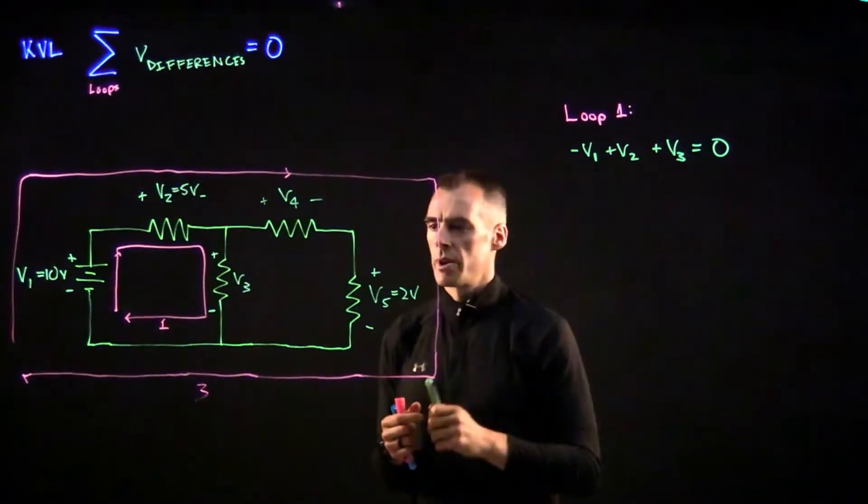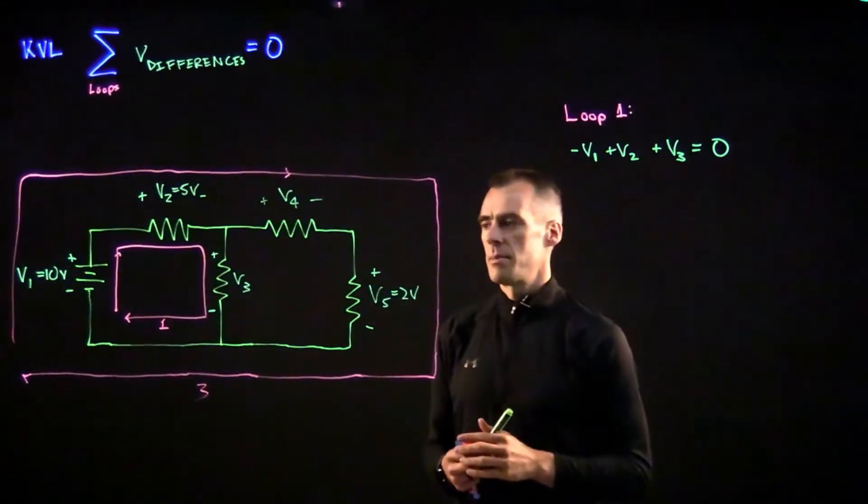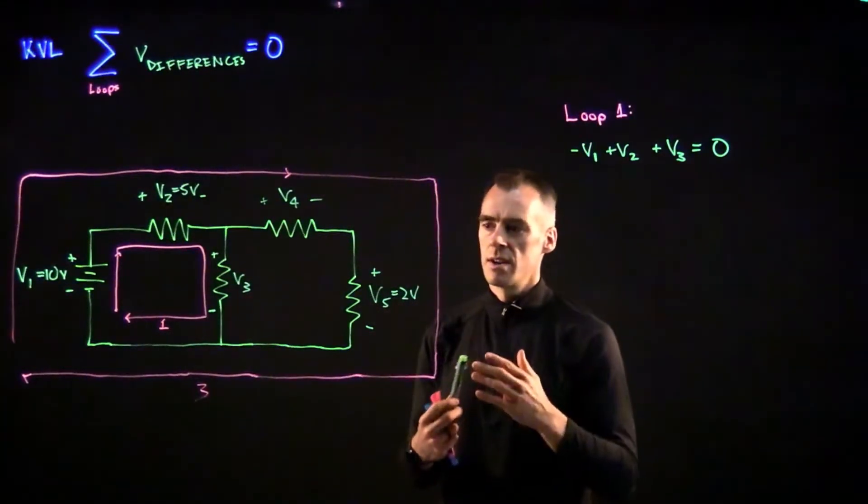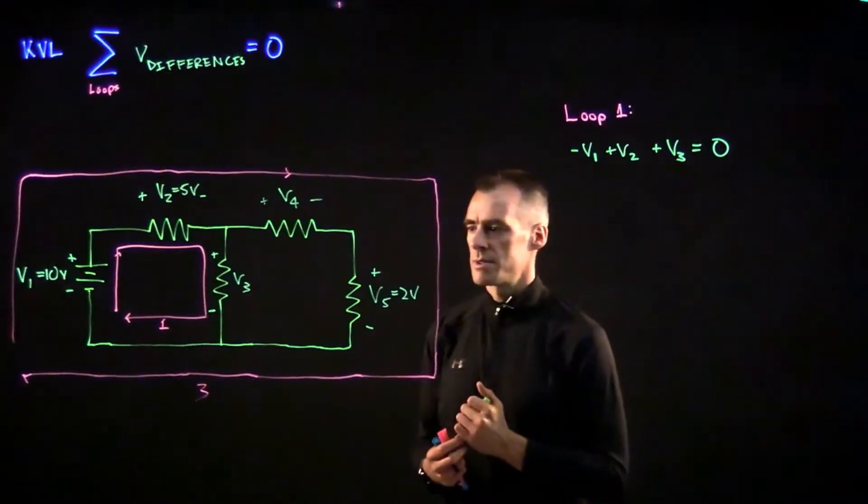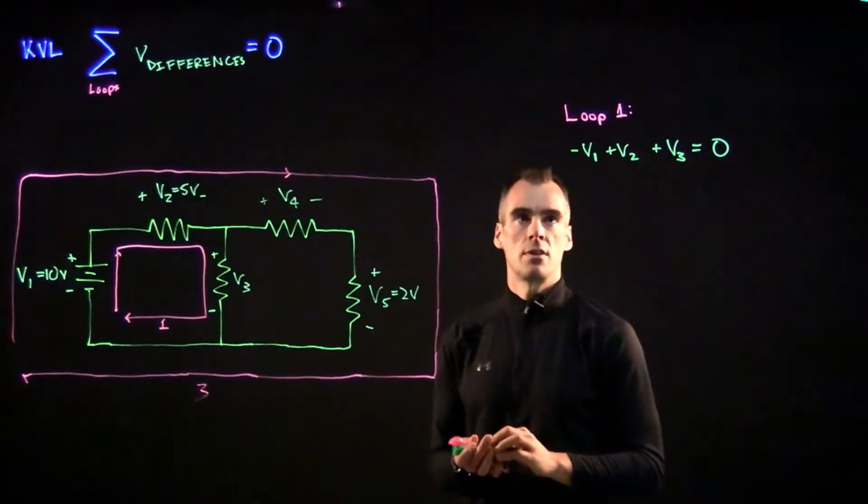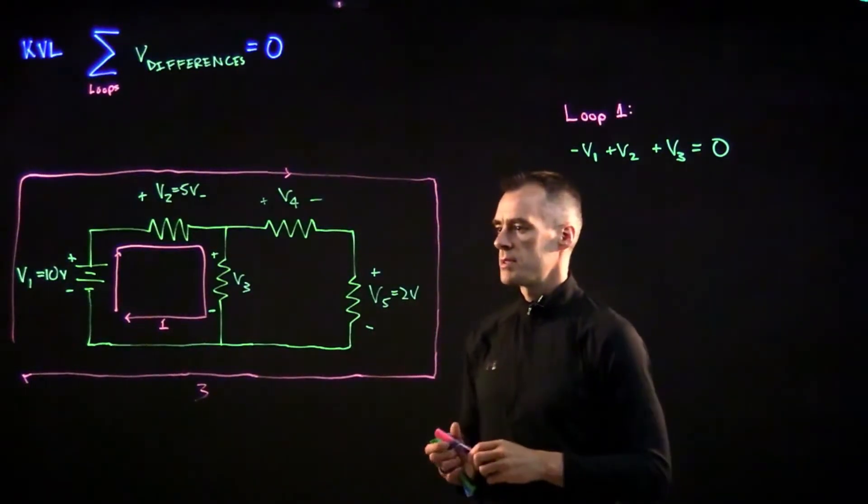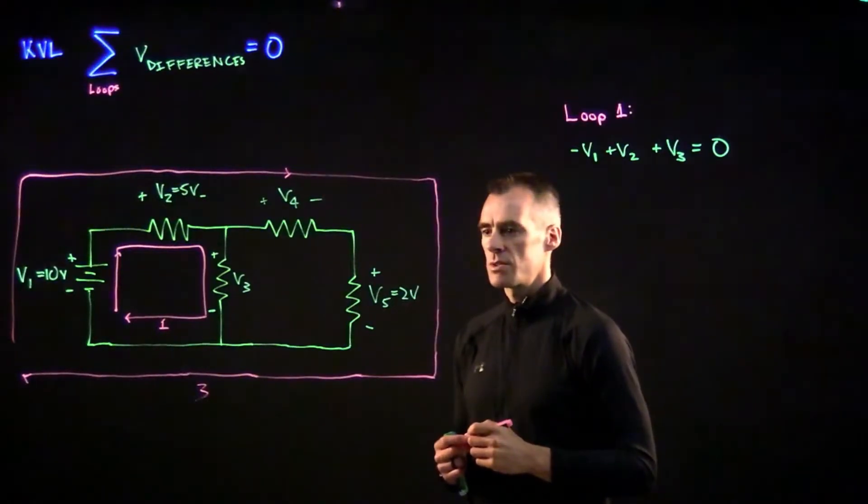So just to make a point here, if we flipped all these signs around, this would still work. You just got to be consistent and make sure that you recognize there's a difference between a source and a resistor. But this will work. So that's our first equation for loop one, and we just need one other loop to figure this out because we only got two unknowns, we just need two equations. But instead of loop three, let's go ahead with another loop here. We'll call this loop two.